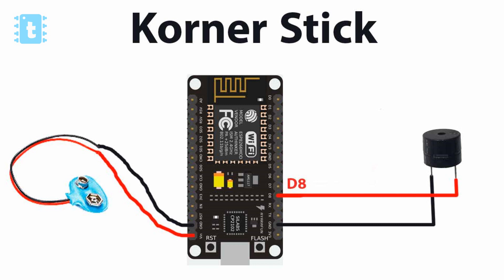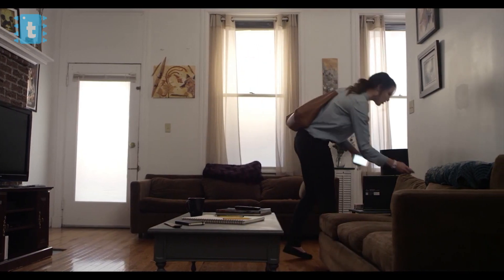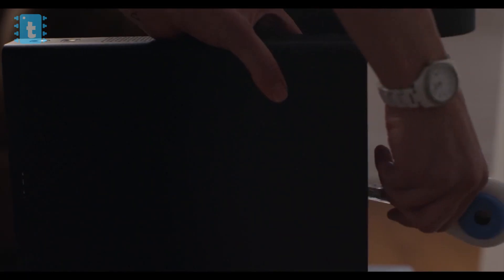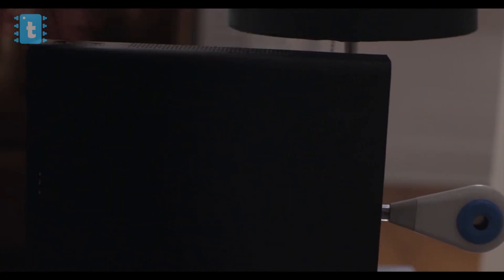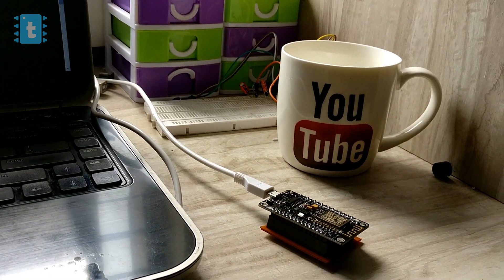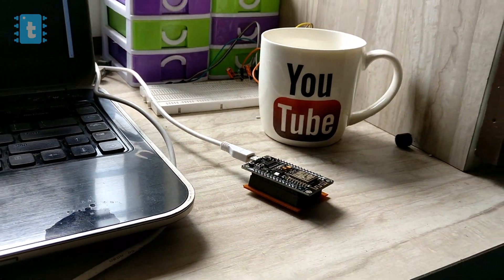The difference between the stick used in the product Corner and the stick used in our project is that the product Corner stick connects with the router via an RJ45 Ethernet connector, while in our case the stick connects with the router via Wi-Fi, which I think is much more convenient than an RJ45 Ethernet connector.